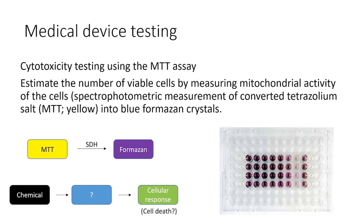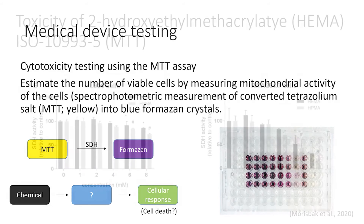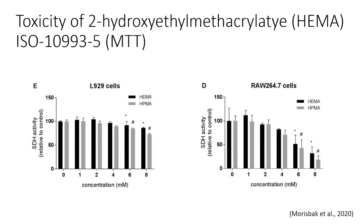The MTT assay alone cannot distinguish between cell death or reduced cell growth, as it only measures the number of living cells. However, as an initial screening test or used to compare the toxic potential of samples, the MTT assay may give valuable information. These diagrams show MTT results from a recently published study performed at NEOM, where two different cell lines — the L929 mouse fibroblast and a mouse macrophage-like cell line — were exposed to HEMA. As seen in the diagram, the choice of cell line may affect the outcome of the MTT test.